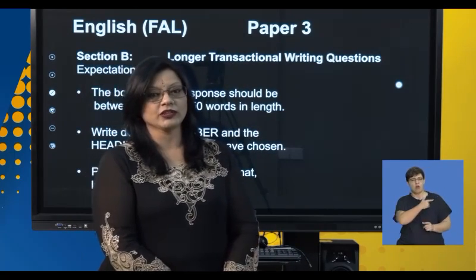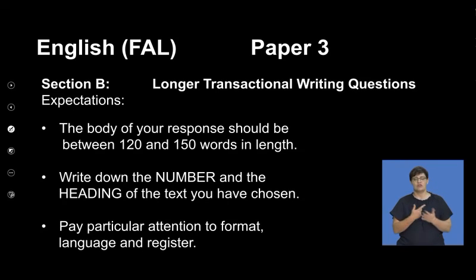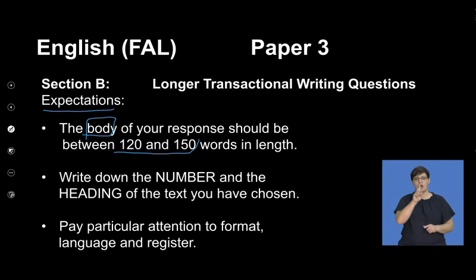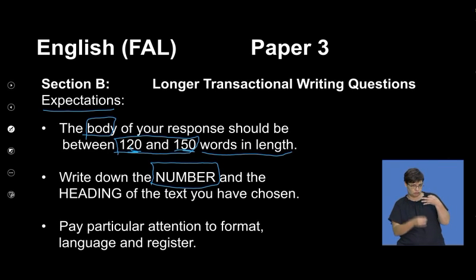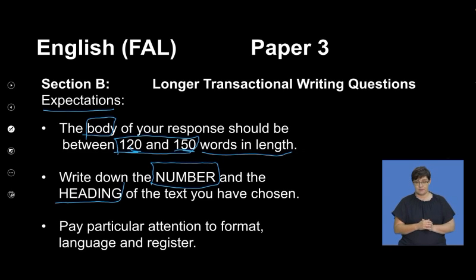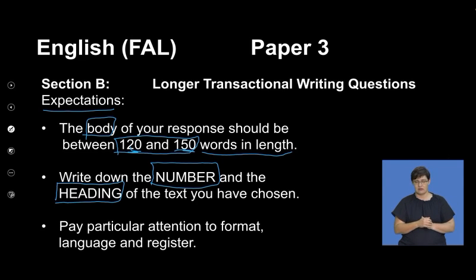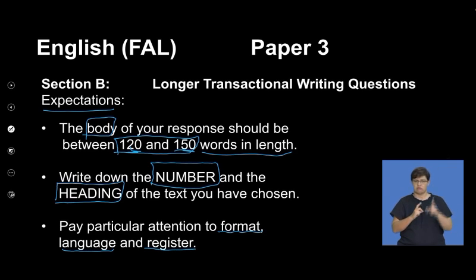We're looking at the longer transactional writing, so let's get to it. The expectations for the longer transactional writing: the body of your response should be 120 to 150 words in length — this is the minimum and maximum. Write down the number again — remember you have a choice, it's section B so it will be question 2.1, 2.2, or 2.3. You need a little heading if need be, but that heading should be included in your plans. You need to pay attention to format, language, and register in this section — it's very important.